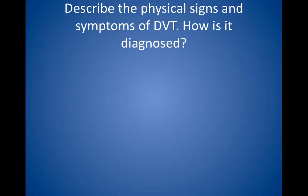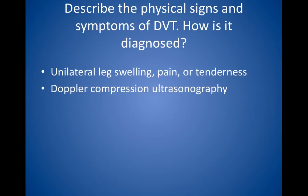Describe the physical signs and symptoms of DVT. How is it diagnosed? Signs and symptoms include unilateral leg swelling, pain or tenderness, and a Homan's sign, which is only present in 30% of cases. Superficial palpable cords imply superficial thrombophlebitis rather than DVT. DVT is best diagnosed by Doppler compression ultrasonography or impedance plethysmography of the veins of the extremity. The gold standard is venography, but this invasive test is reserved for situations when the diagnosis is not clear.